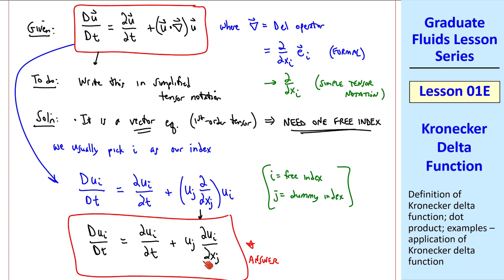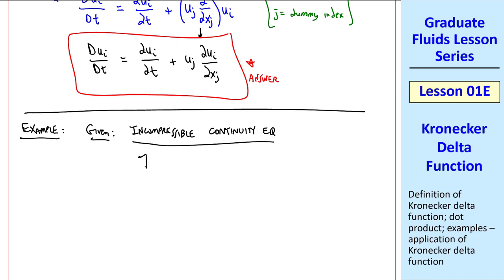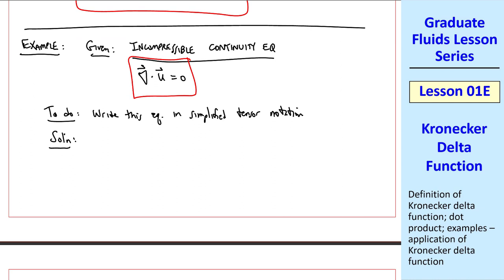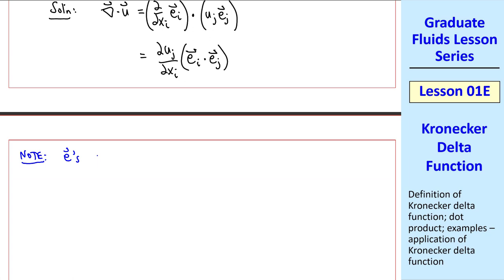I'll do one more example. Let's take the incompressible continuity equation, which in vector form you may recall as del dot u equals zero. The divergence of the velocity vector is zero. We want to write this equation in simplified tensor notation. Since it's a dot product, we can write del dot u as the del operator dotted with the velocity vector. I can rewrite this as del uj del xi, ei vector dot ej vector. I'll make some comments here. These unit vectors are independent of location. They do not change with x1, x2, or x3. Therefore, del del x of e must be zero.